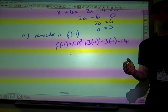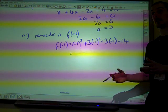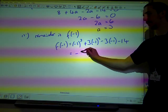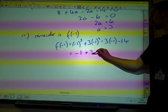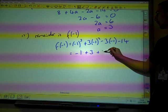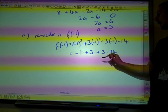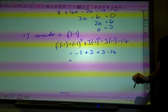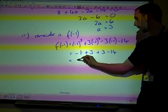Remember, we're now on calculator stuff, so you can just carefully type that into your calculator and get minus 1 plus 3 plus another 3 minus 14, which is minus 9.